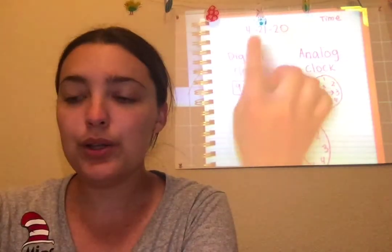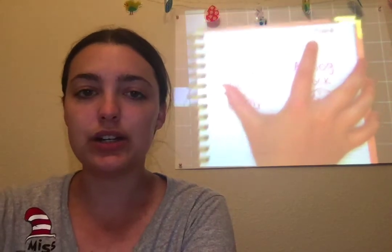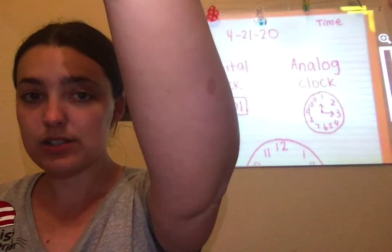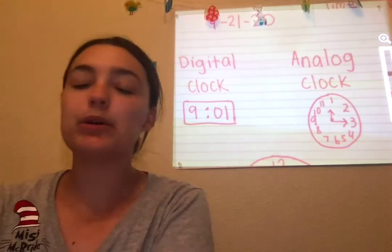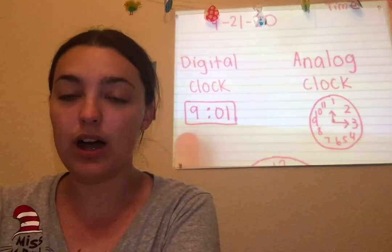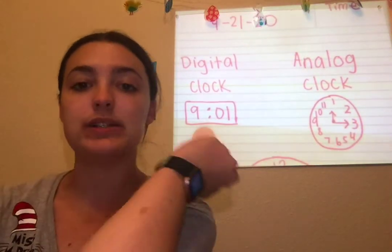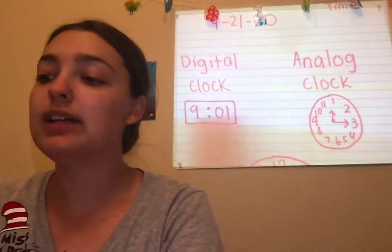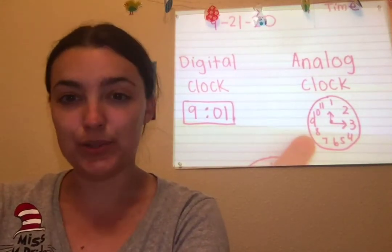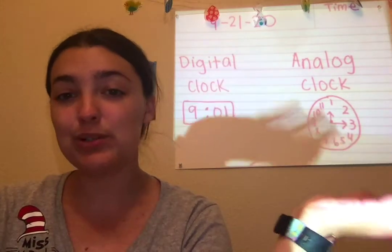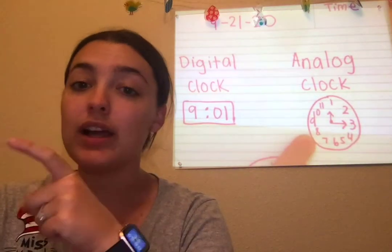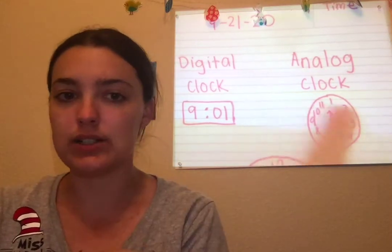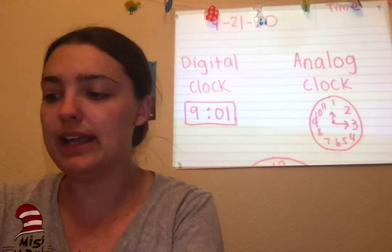If you go all the way back to the notes that we took on the 21st, you'll remember we talked about two different types of clock. A digital clock, like what you would see on your watch or on your phone, and an analog clock, which is what you might see in a classroom or in your house. This is an analog clock.